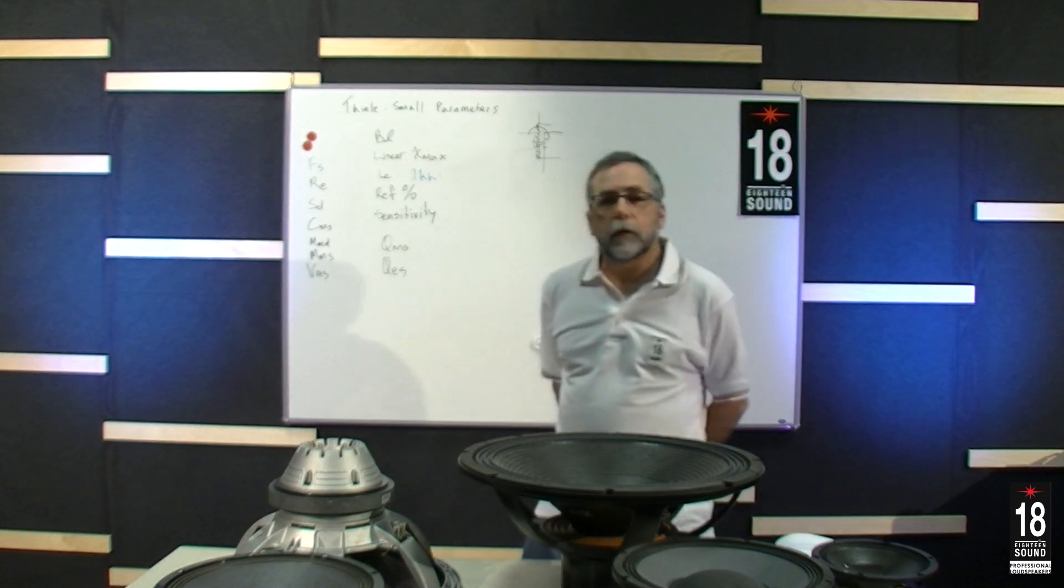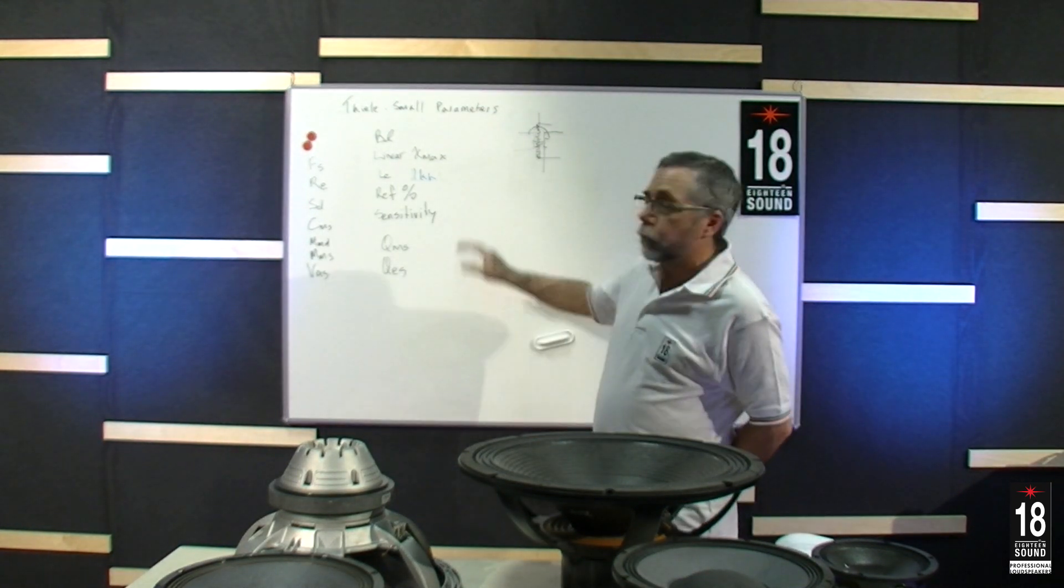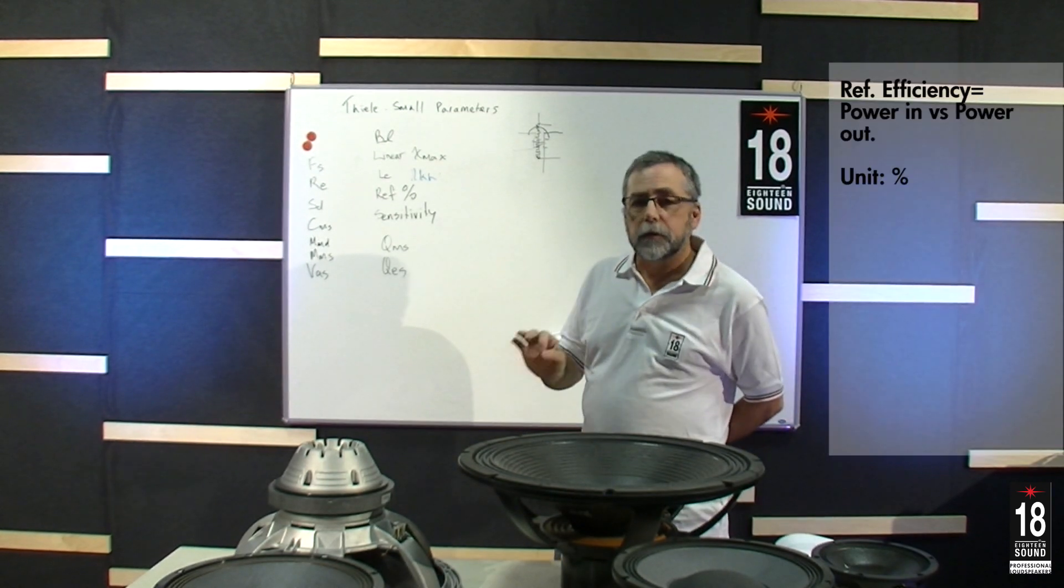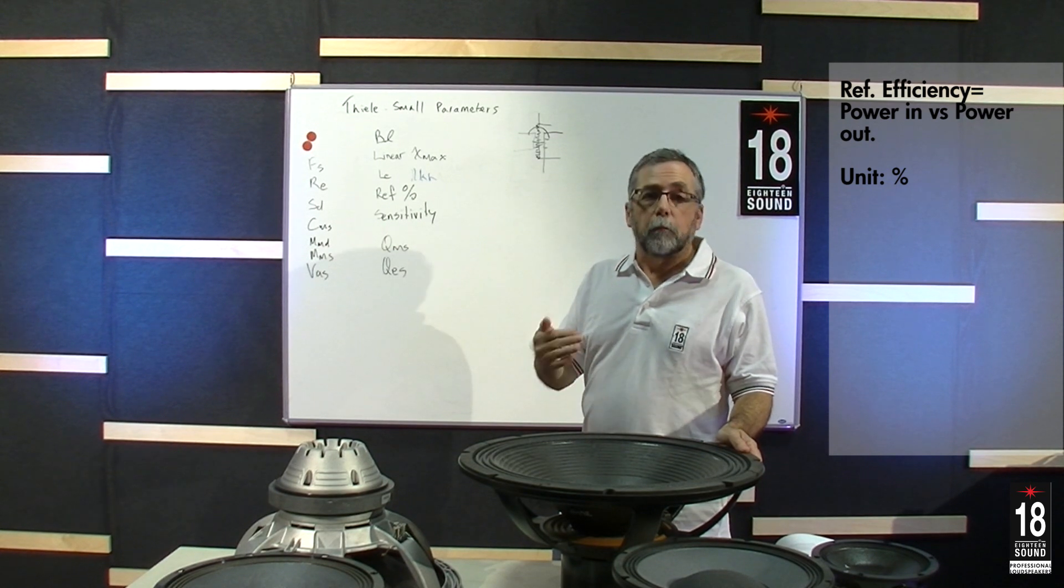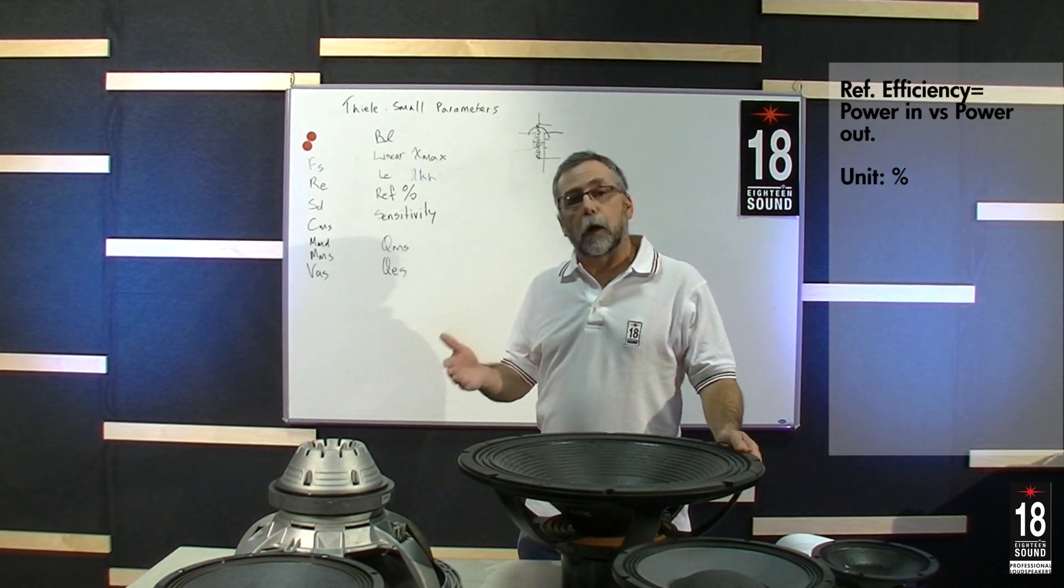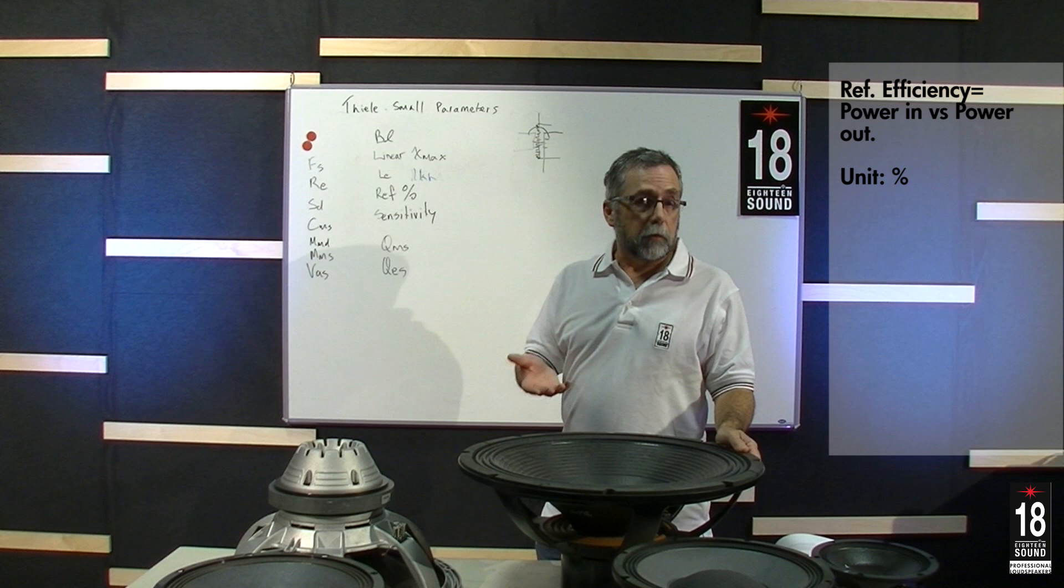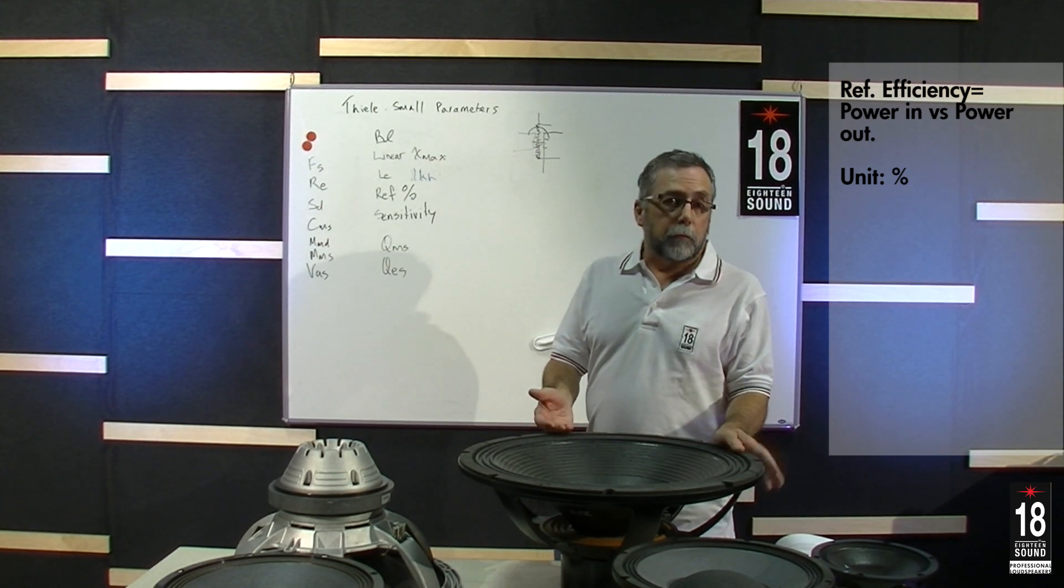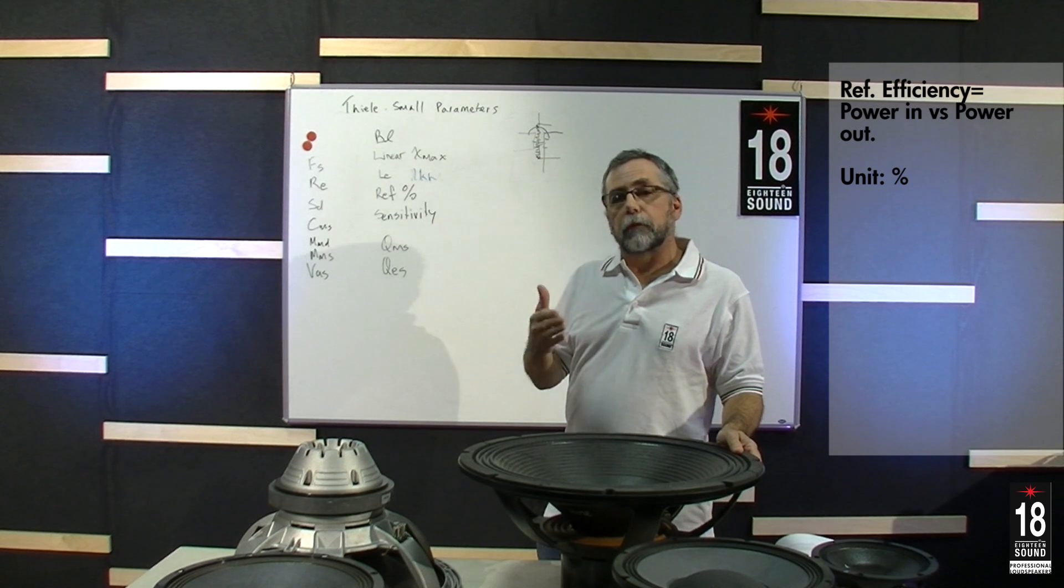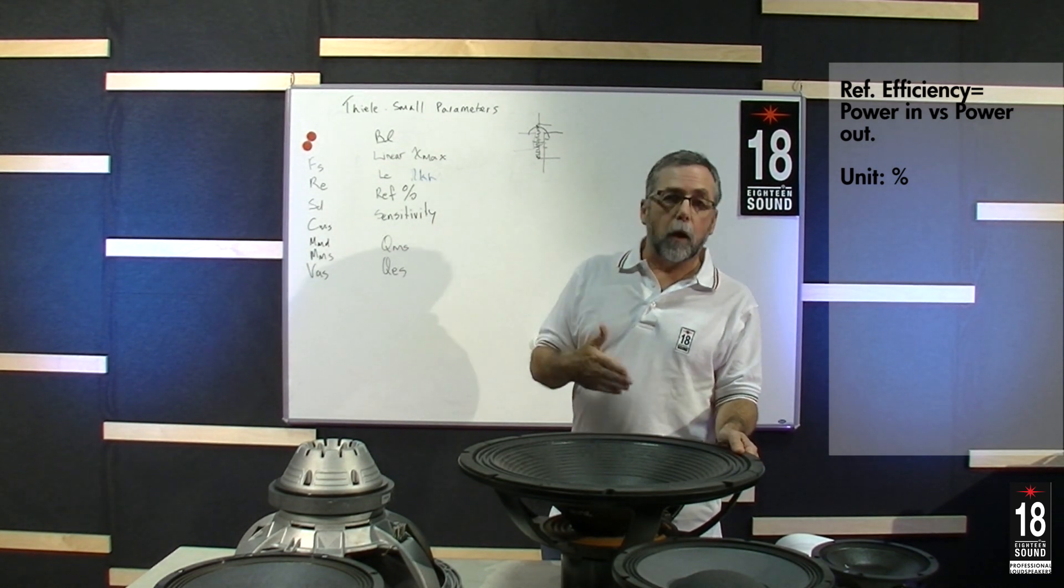Next on the Thiel-Small list is reference efficiency. This is an efficiency calculation based on power in versus power out, and is a simple conversion defined in percentage.